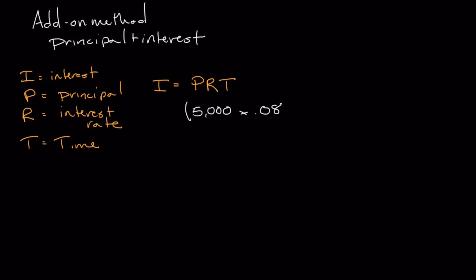This loan is going to be carried out for three years. All we simply need to do is multiply each of these numbers together. Go ahead and pause the video and perform the calculations on your own. If you multiply $5,000 by 0.08, you get $400 per year.